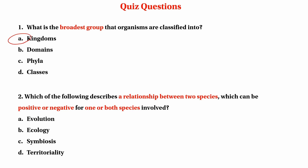We shall cover the following: describe a relationship between two species. Any relationship between species can be positive or negative for one or both species involved.